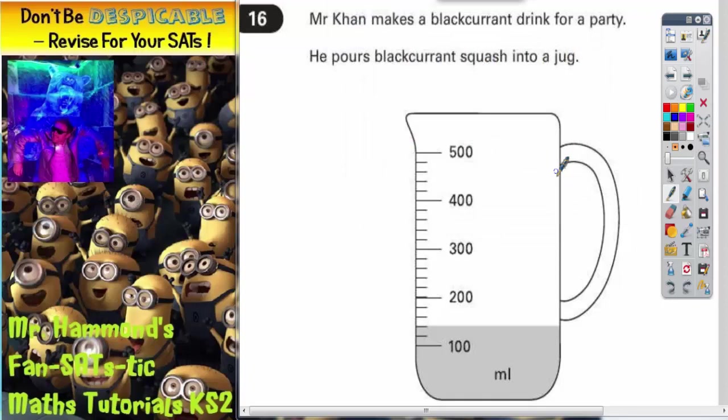Question 16. Mr. Kahn makes a blackcurrant drink for a party. He pours blackcurrant squash into a jug.